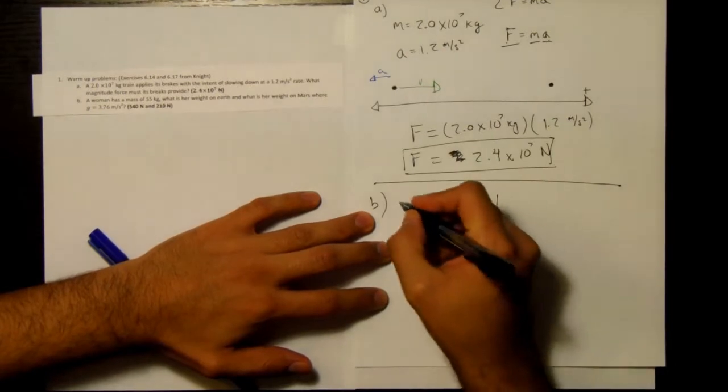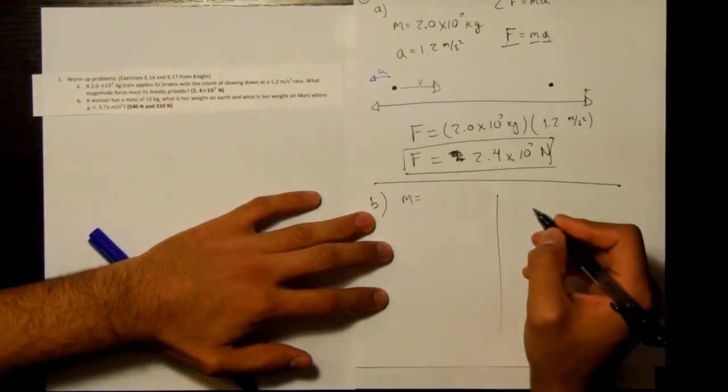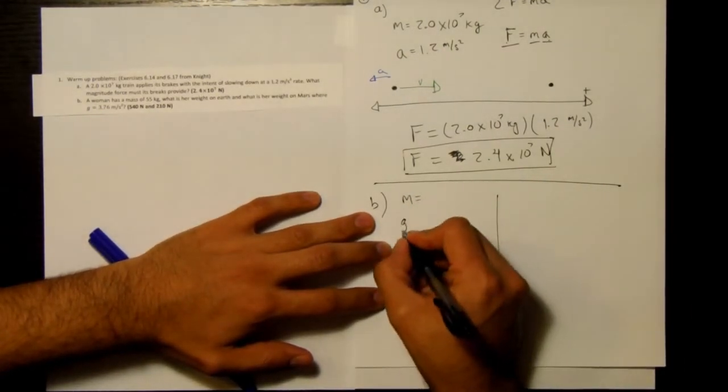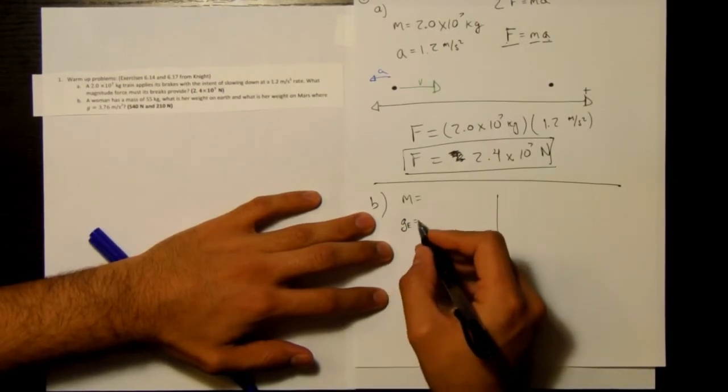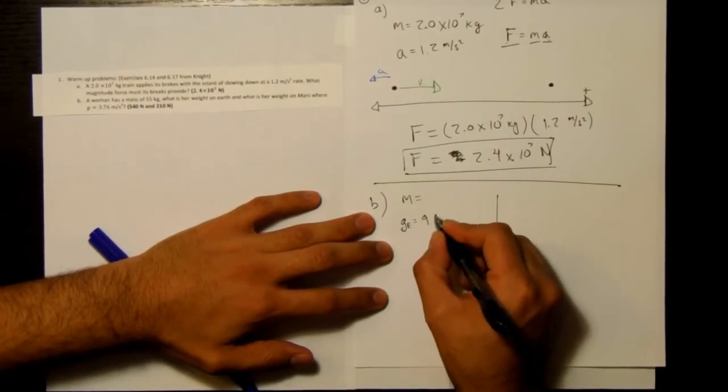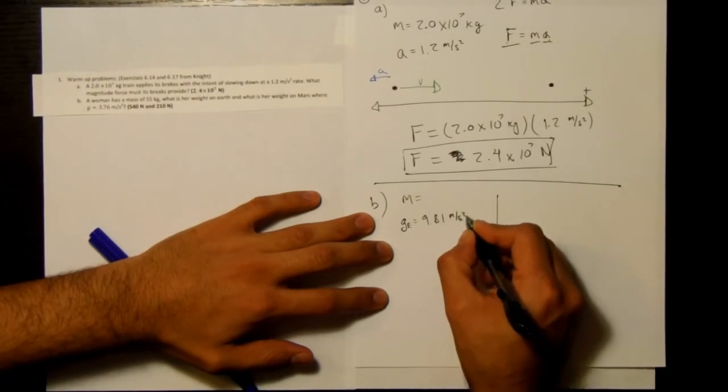So we've got two situations, one on Earth, one on Mars. And we know that g on Earth is equal to 9.81 meters per second squared.